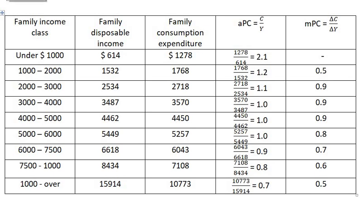The APC in this table shows that percentage of income devoted to consumption expenditure. As income increases, the APC decreases. The APC is used to represent the family average propensity to consume, instead of APC which is used to represent the aggregate average propensity to consume.